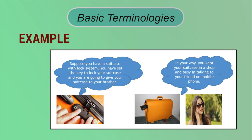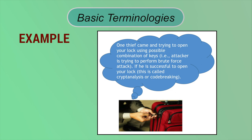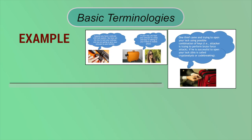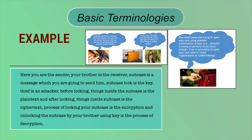You can understand cryptography with the following analogy: suppose you have a suitcase with a lock and you send it to your brother. While you're busy, a thief tries to open your lock using possible key combinations — that is, the attacker performs a brute force attack. If successful, this is called cryptanalysis or code breaking. Here, you are the sender, your brother is the receiver, the suitcase is the message, and the lock is the key. Before locking things inside the suitcase is plain text; after locking is ciphertext. Locking the suitcase is encryption, and unlocking it with the key is decryption.